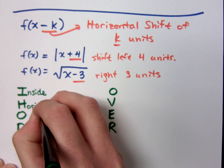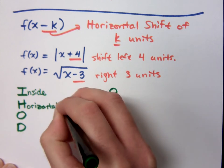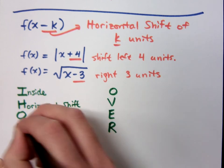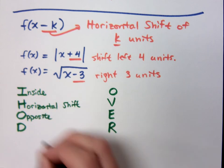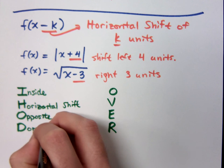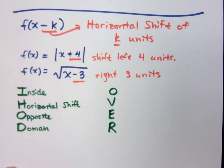I stands for being inside the function. It gives you a horizontal shift opposite of what you see. And this may affect the domain.